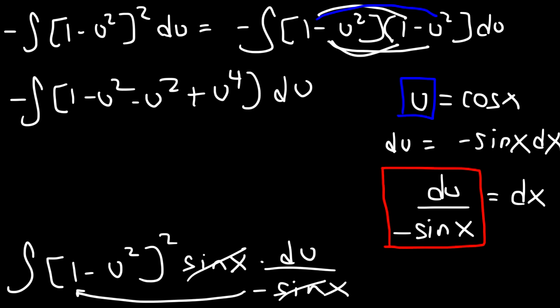Now our next step is to add like terms. -u^2 - u^2 is -2u^2. So it's going to be 1 - 2u^2 + u^4, du.